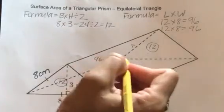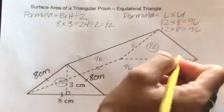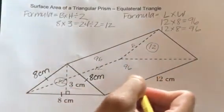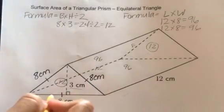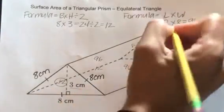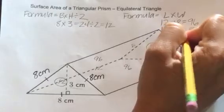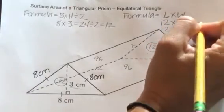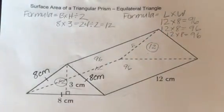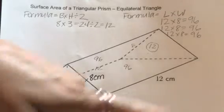And then lastly, we have this bottom rectangle, and as you can see, the bottom rectangle is also a 12 by 8. So then we have to do 12 times 8 again, which is 96. You could just times by 3. That might be easier for you to do. It's up to you.